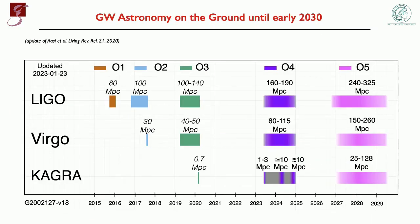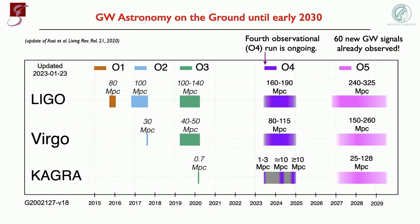Let me now talk about the future. These are the detectors that have been operating until now. We are at the fourth observing run, which started last May. The numbers shown indicate the distance at which a detector can see a binary neutron star coalescence — the increasing numbers mean we are sensitive to a larger volume. In the last run, just since May, we have detected 60 new gravitational wave signals, basically once every three days. The interferometers will then stop for a few years and come back online near the end of this decade for a final run, with upgrades called A-Sharp for LIGO and corresponding upgrades for Virgo.